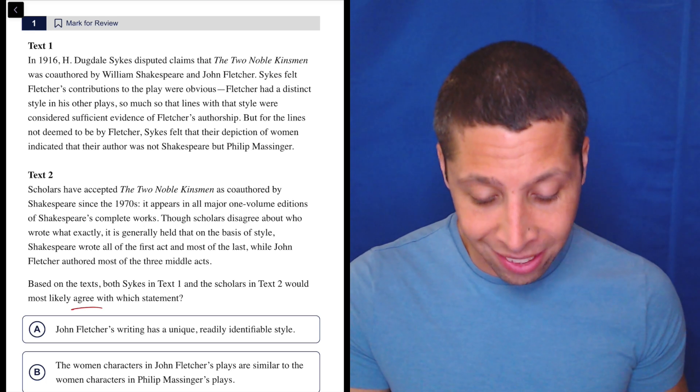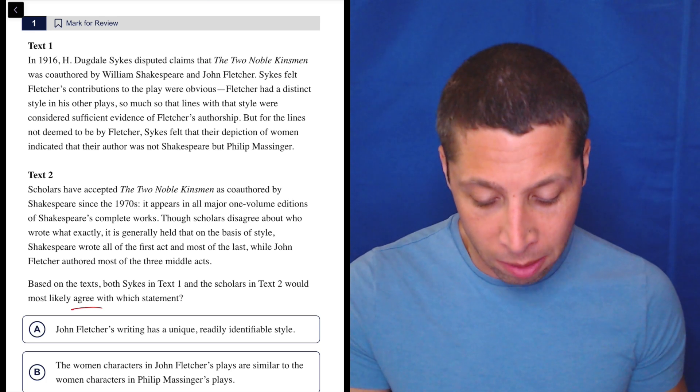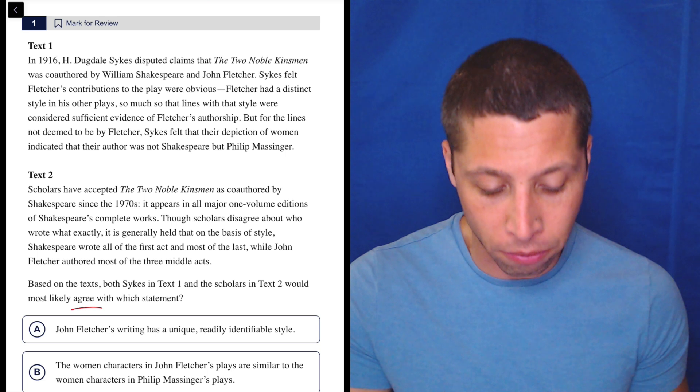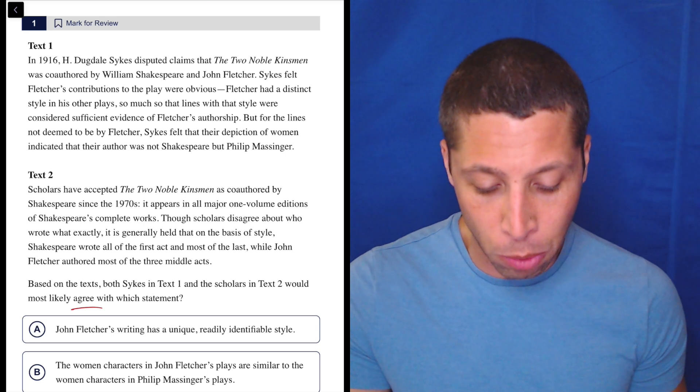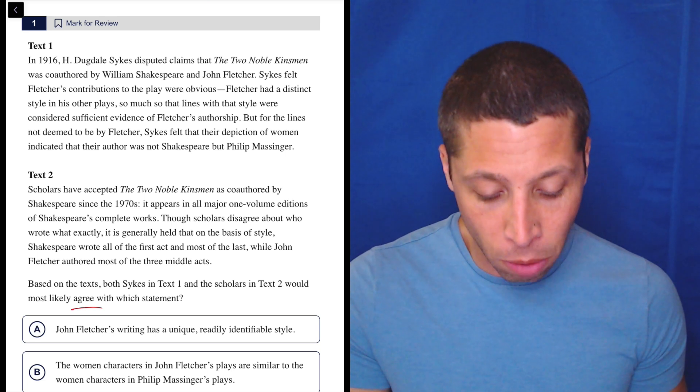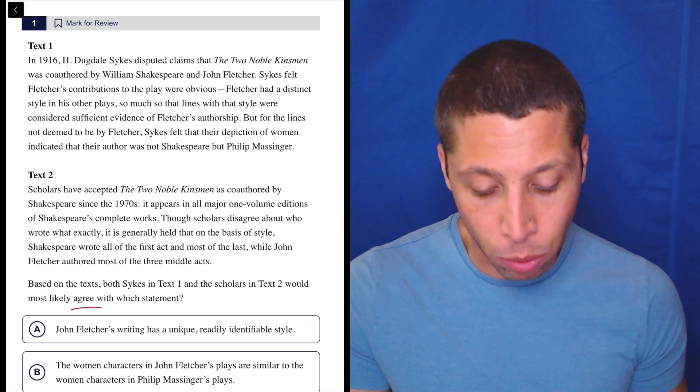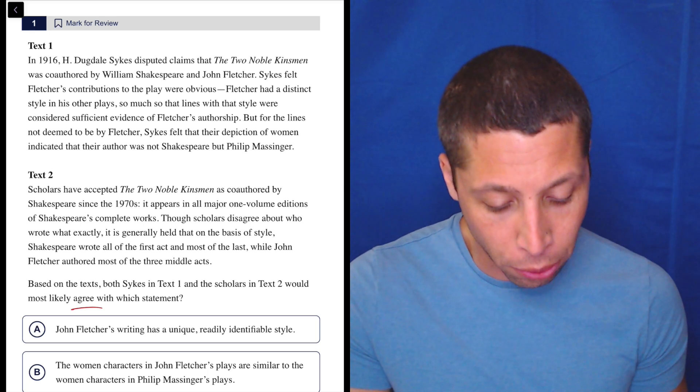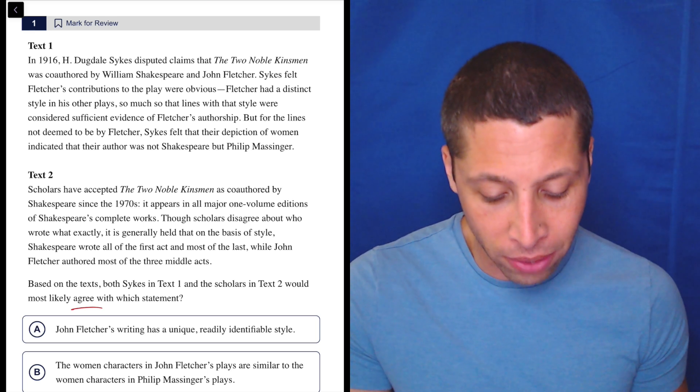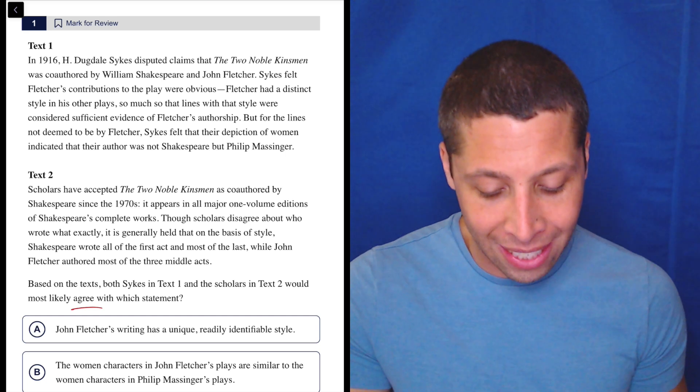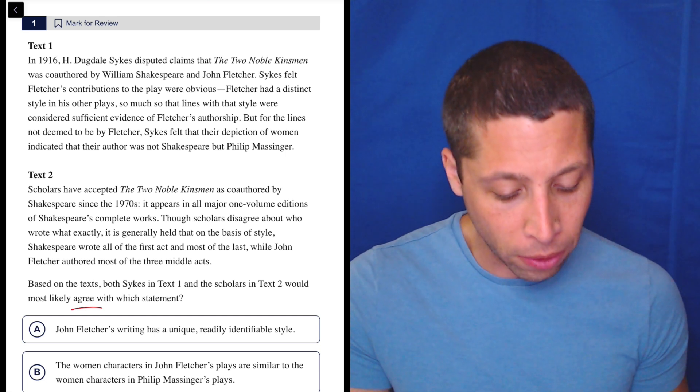In 1916, H. Dugdale Sykes disputed claims that The Two Noble Kinsmen was co-authored by William Shakespeare and John Fletcher. Sykes felt Fletcher's contributions to the play were obvious—Fletcher had a distinct style in his other plays, so much so that lines with that style were considered sufficient evidence of Fletcher's authorship. But for the lines not deemed to be by Fletcher, Sykes felt that their depiction of women indicated their author was not Shakespeare, but Philip Massinger.